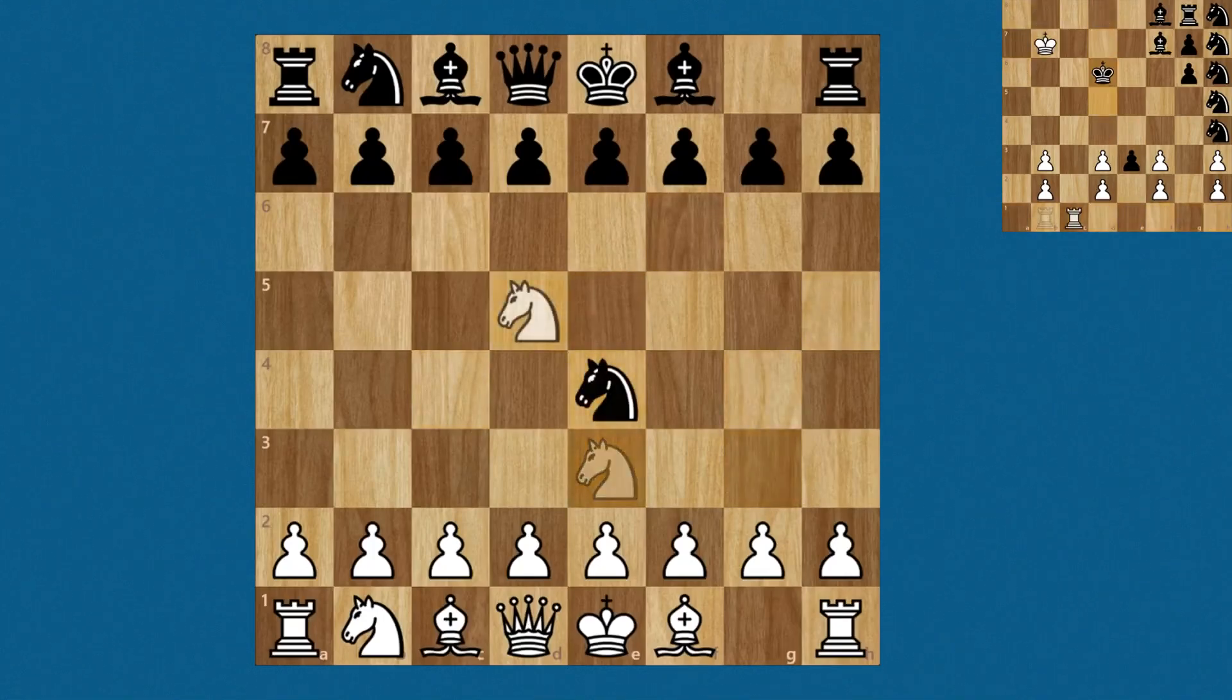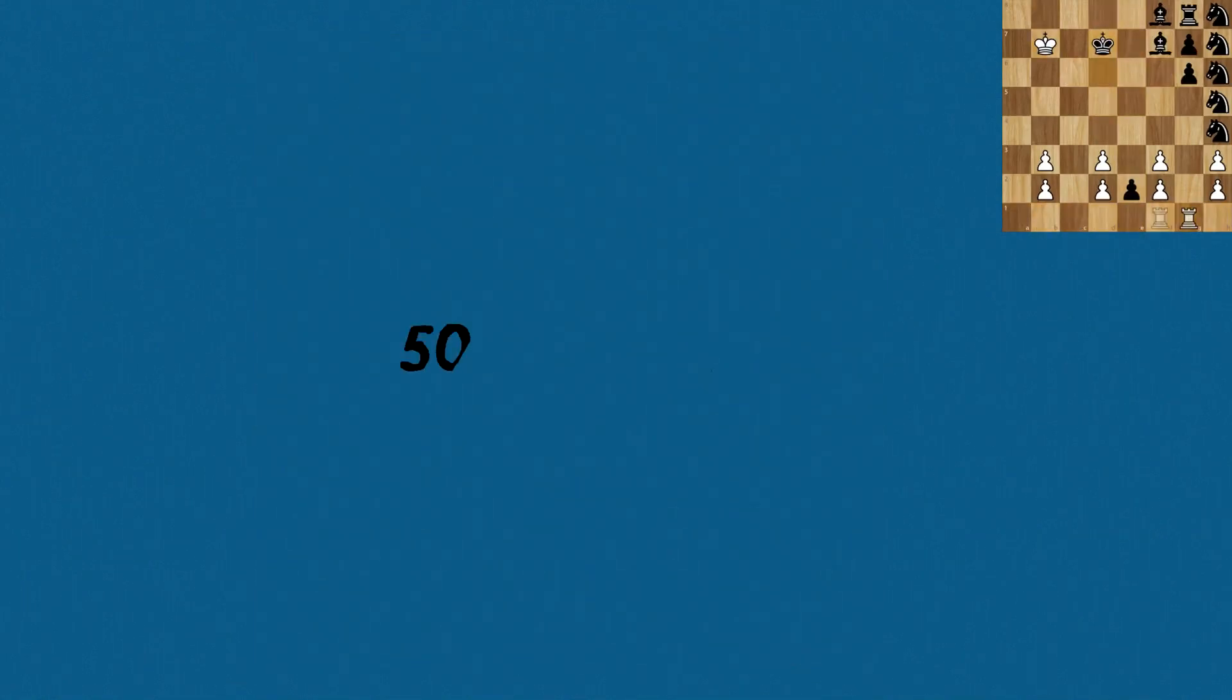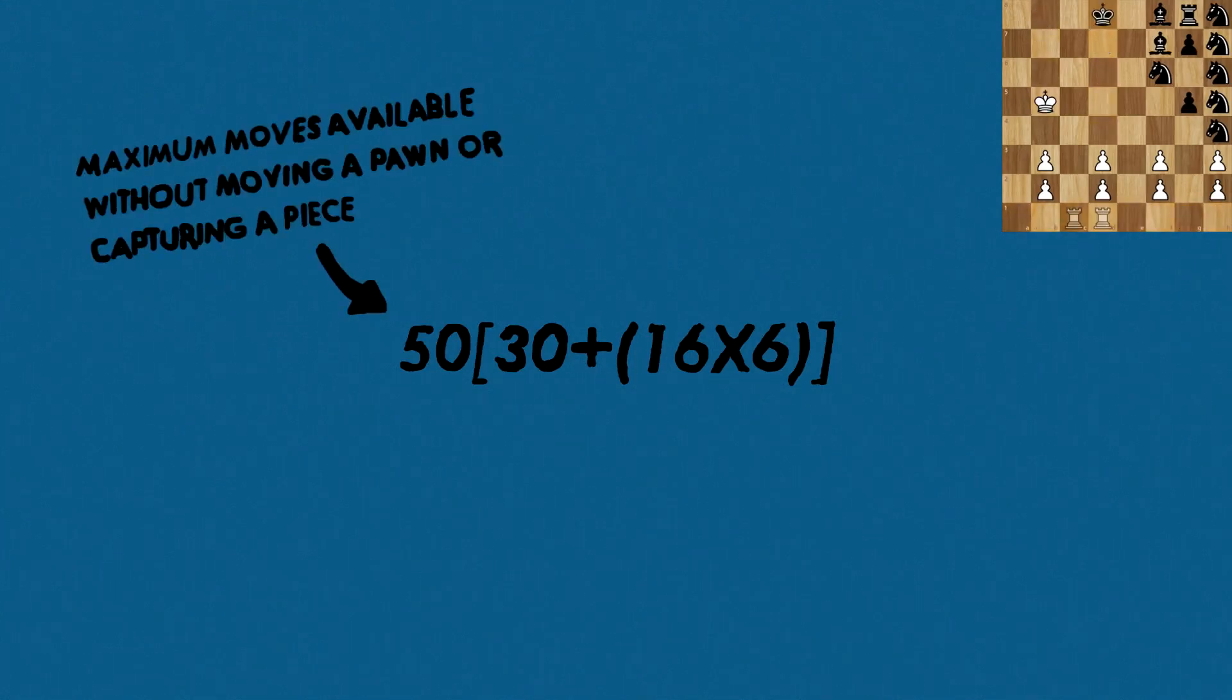Because of this, we can calculate roughly what the longest possible chess game can be using this equation. When we look at the equation 50 times 30 plus 16 times 6, it might not make sense, so let's break it down a little bit further.